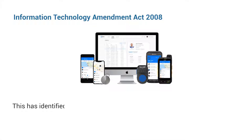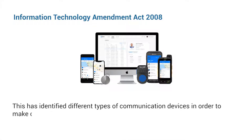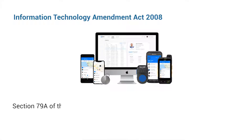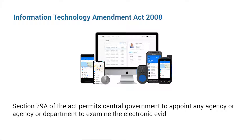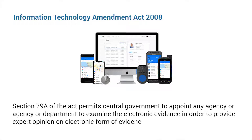This has identified different types of communication devices for communication of electronic documents. For example, Section 79A permits the central government to appoint any agency or department to examine the electronic evidence in order to provide expert opinion on electronic form of evidence.